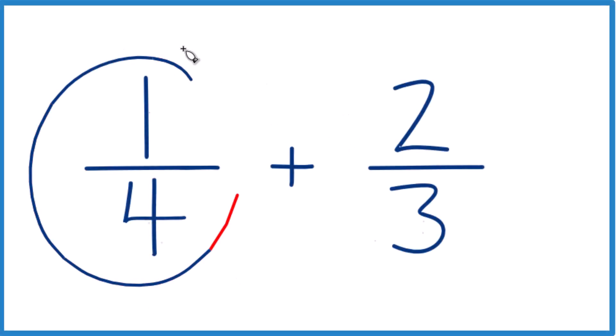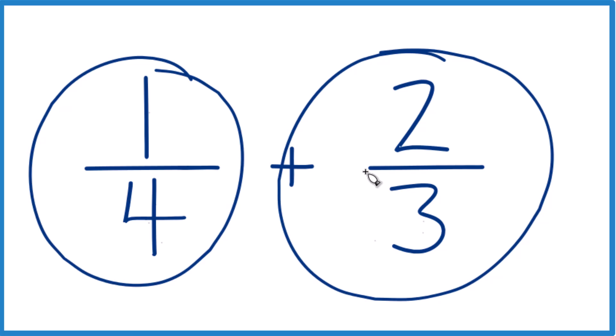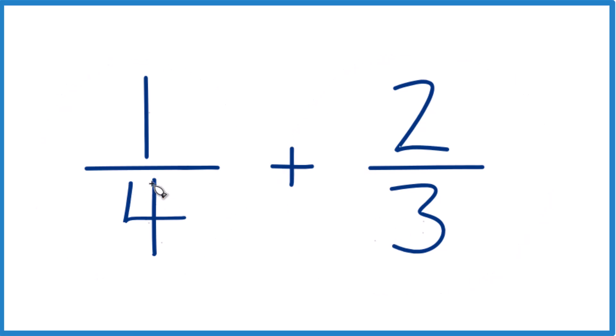Let's figure out what is 1 fourth plus 2 thirds. Here's how you do it. What we need to do is find a denominator that's the same, so a common denominator. Then we'll just add the numerators and we'll find our fraction.